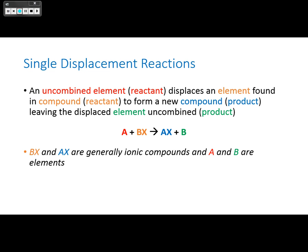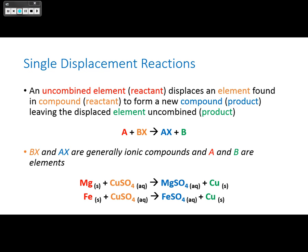BX and AX are generally ionic compounds, and A and B are elements. For example, magnesium plus copper sulfate makes magnesium sulfate and copper, or iron plus copper sulfate makes iron sulfate and copper.